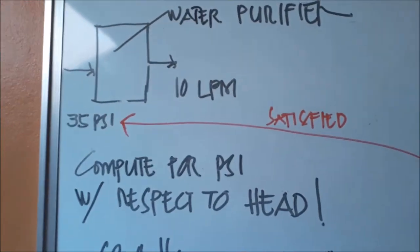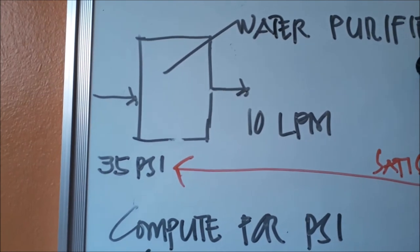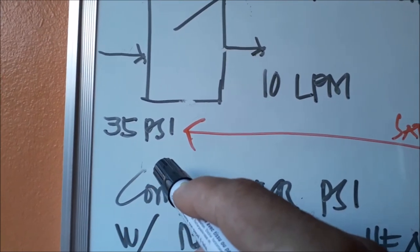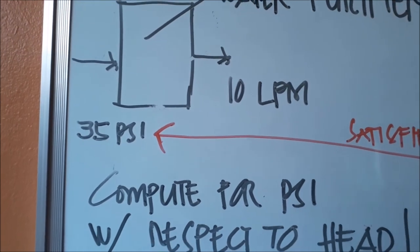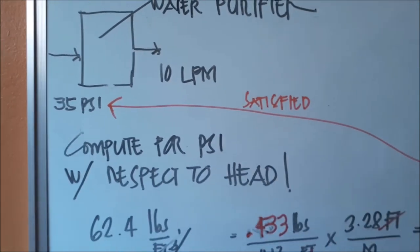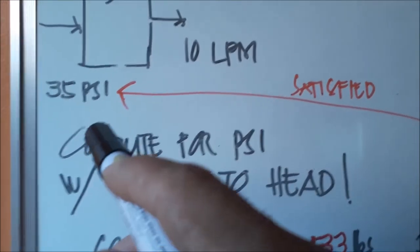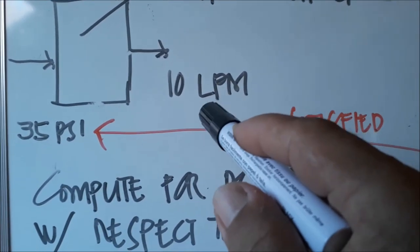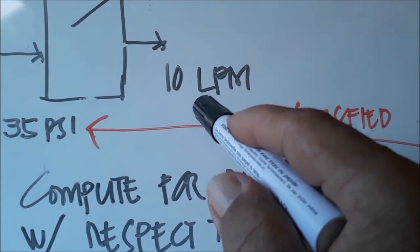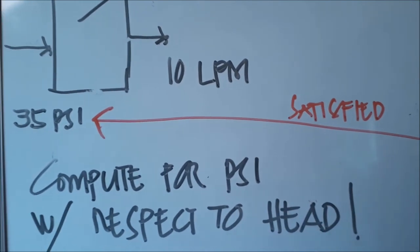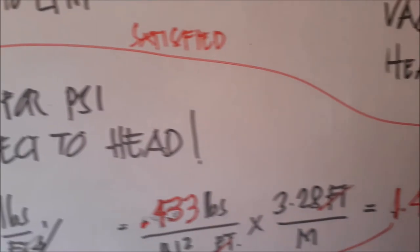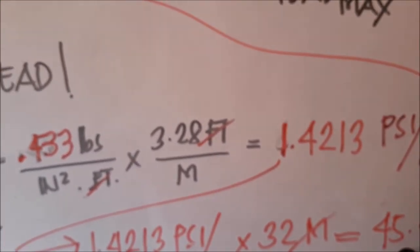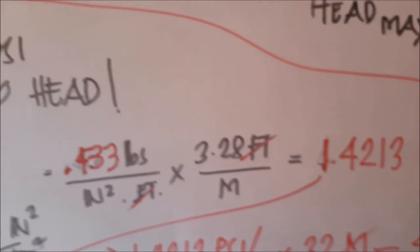Now let's return to the water purifier. This 35 PSI inlet pressure requirement is only an assumption for our study. We know there's a 35 PSI pressure requirement for the water purifier and its outlet flow is 10 LPM liters per minute. We selected 45 PSI, which is more than 10 PSI above the water purifier requirement.